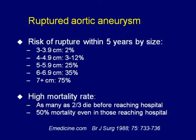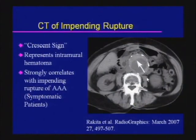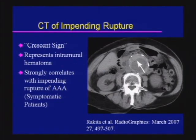The risk of rupture goes up significantly when the aneurysm has reached 5 centimeters — from about 10% to 25% — and at this point the risk of rupture exceeds the morbidity of surgery, so these patients undergo urgent repair. Many die before reaching the hospital, and even if they do, there is a 50% mortality. The crescent sign — crescentic high-density material within the aortic wall representing intramural hematoma — strongly correlates with impending rupture of the AAA, particularly in symptomatic patients.